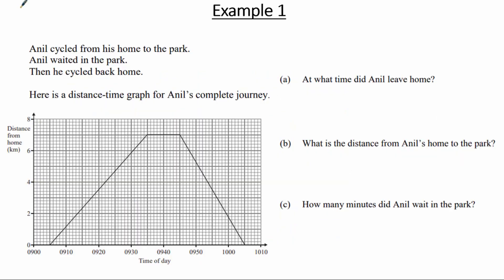Let's take a look at example one. In this example, Anil cycled from his home to the park, waited in the park, then cycled back home. Here is the distance time graph for Anil's complete journey, where distance from home in kilometers goes on the vertical axis and time of day goes on the horizontal axis.